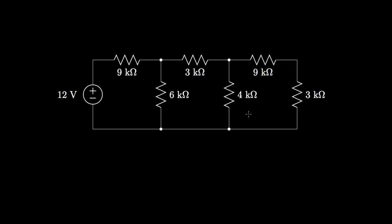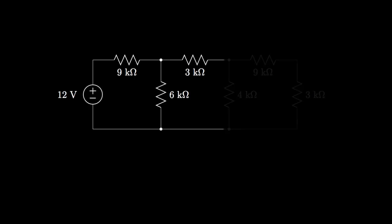Recall that the equivalent resistance for the parallel combination of two resistors is obtained by dividing the product of the resistances by their sum. In this case, the product would be 4-kilohm times 12-kilohm, and the sum would be 4-kilohm plus 12-kilohm. So we replace that segment with its equivalent resistance of 3-kilohm.